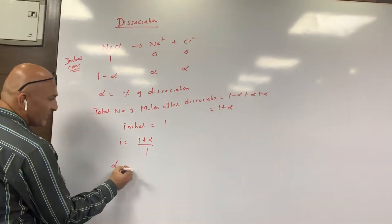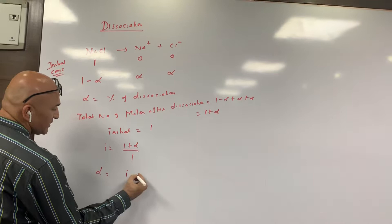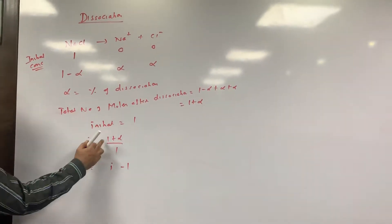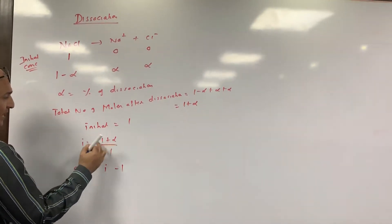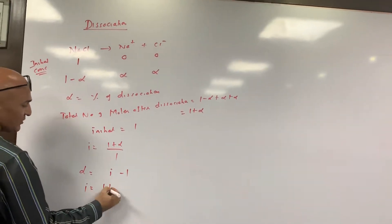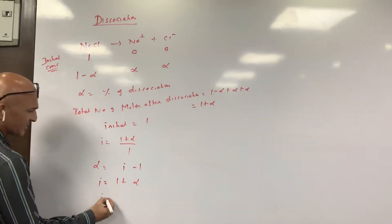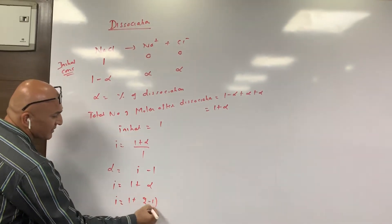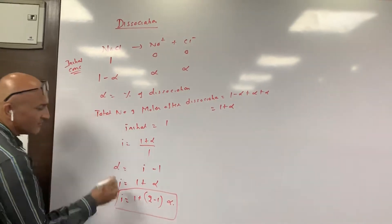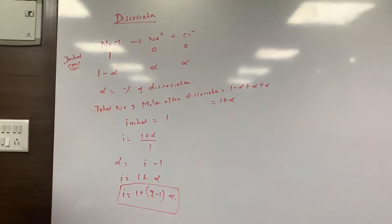From i = 1 + α, I can write α = i − 1. So for NaCl, which gives 2 ions, i = 1 + (2−1)α = 1 + α. This will become clear — just write it like this.